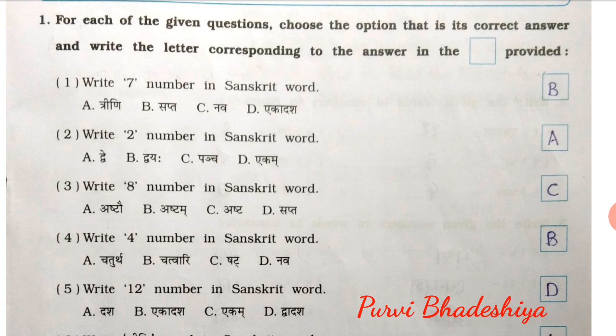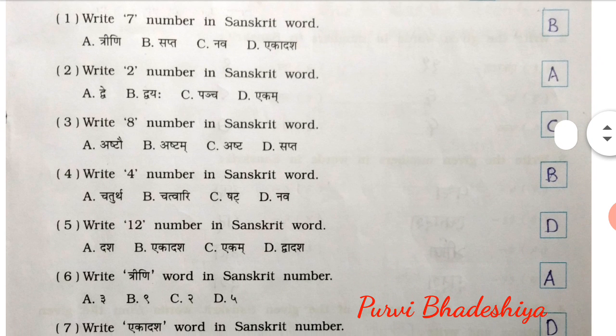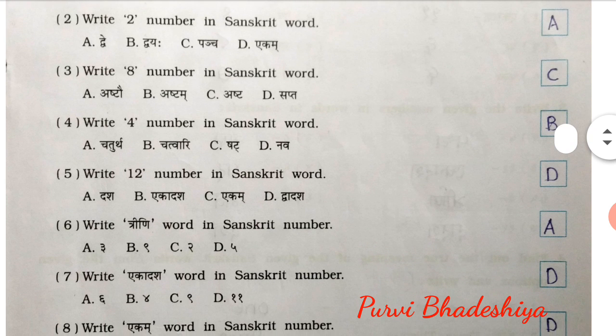Exercise number 1. For each of the questions, choose the option that is its correct answer and write the letters corresponding to the answer in the box provided. MCQ number 1: Write 7 number in Sanskrit word. So the answer is B — Shabta. 2nd: Write 2nd number in Sanskrit word. So the answer is A — Dre.